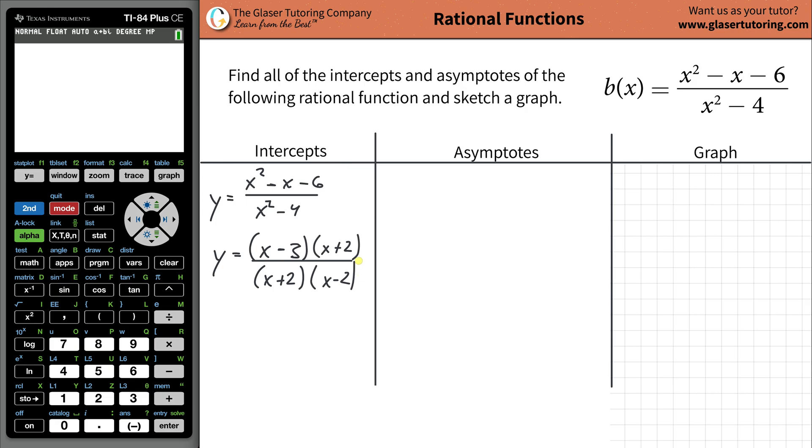So now notice, what do we have? We have common factors. Get rid of them. Get rid of them. Okay? This is extremely important, because if you do the problem without getting rid of those common factors, everything is going to be wrong. So what you're left with is your function, in most simplified form, is going to be x minus 3 divided by x minus 2. This is the function we're going to use now to analyze the problem.